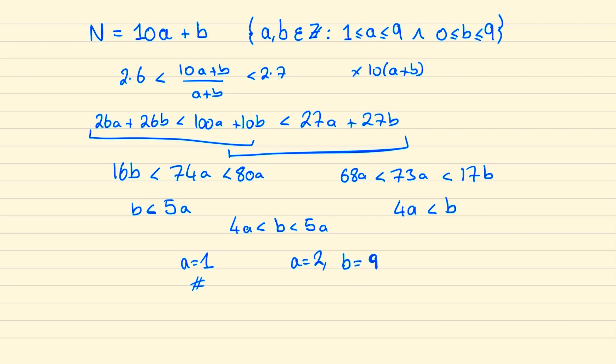And if we looked at values for a when it were 3 or bigger then b would no longer be a digit and hence the only possibility can be when a is 2 and b is 9 and so our number n is 29. And so we're done.